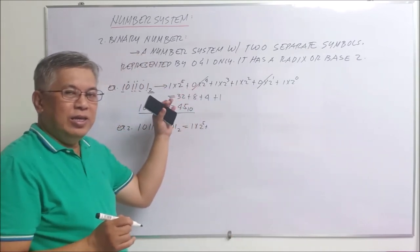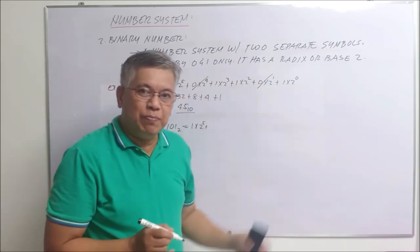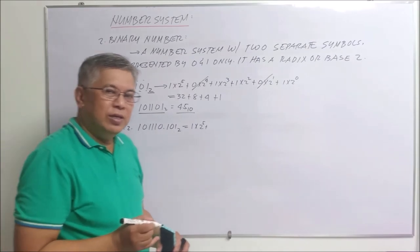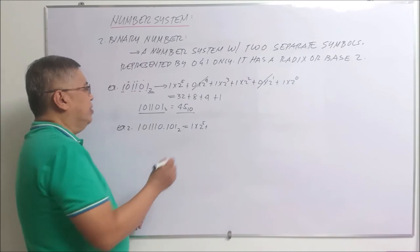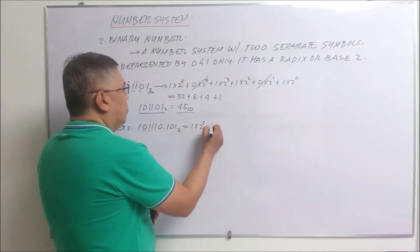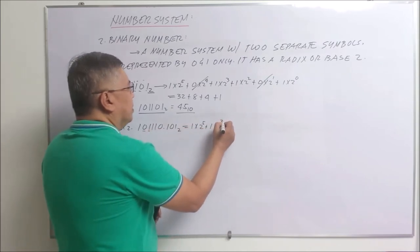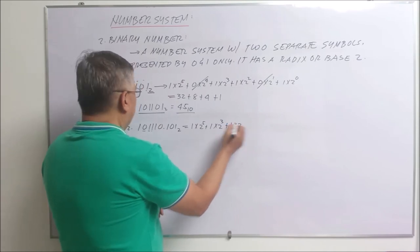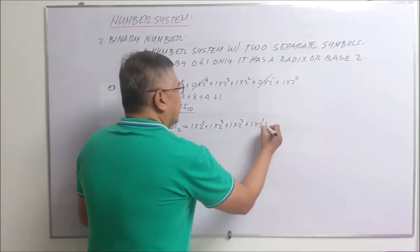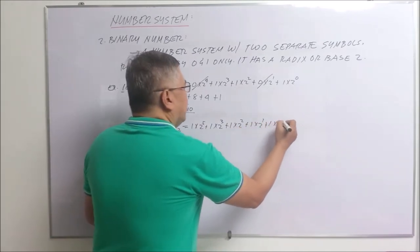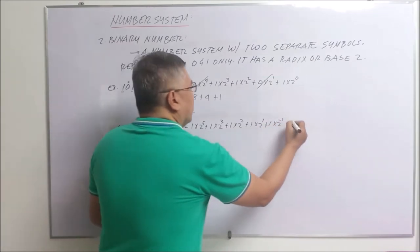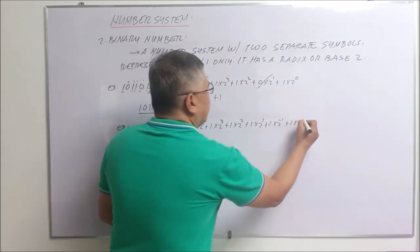In the decimal number system that point is called the decimal point, but here we use the binary number system so the point is called the binary point. For the positional notation: one times two to the five, plus one times two to the three, plus one times two to the second, plus one times two to the first, plus one times two to the minus one, plus one times two to the minus three.